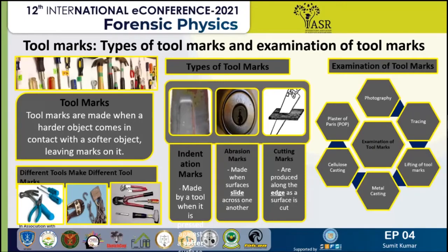Good afternoon. My topic is the tool marks, type of tool marks, and examination of tool marks. Tool marks is the impression left by the contact of a tool onto a surface. When the tool or object contacts the surface with sufficient force to create an indentation, the pattern of the tool is permanently reproduced on that surface. Tool mark examination is an important discipline of criminalistics, and its goal is to establish a link between a tool mark and the tool that created it.